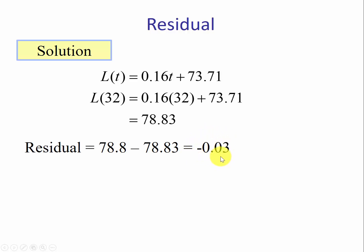The model did a very good job of estimating the life expectancy for this year. Because it is negative, the model overestimated by 0.03 years.